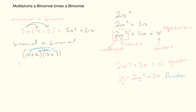Working that out: x times x is x squared, x times 3 is positive 3x, 2 times x is 2x, and 2 times 3 is plus 6. We notice we have two like terms, 3x and 2x, which we combine to get x squared plus 5x plus 6. We have collected our like terms and arrived at a trinomial.